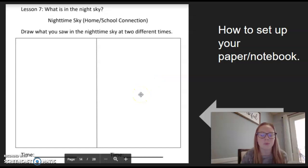So your assignment is to use a piece of paper and a pencil and a notebook, or on a piece of paper, draw this little box and draw a picture of what you see in the nighttime sky at two different times.